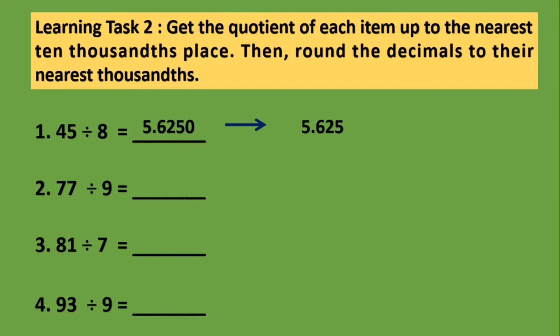Number 2, 77 divided by 9 gives us 8.5555 or 8 and 5,555 ten thousands. So, ang digit na nasa thousands place would be 5, and ang nasa kanan niya is 5. By the rule, kapag 5 yan, mag-a-add pa rin tayo ng 1 to the rounding number. So, the answer would be 8.556 or 8 and 556 thousands.